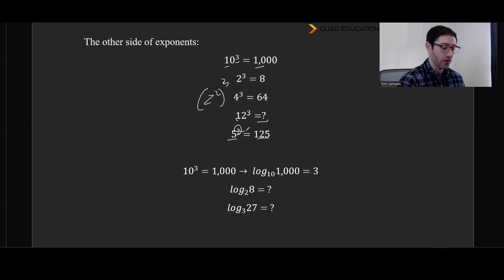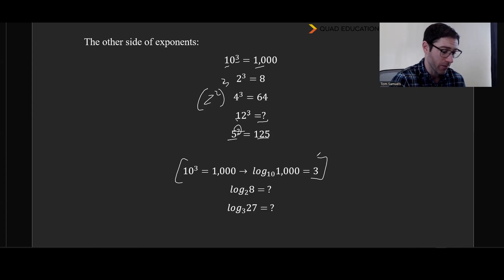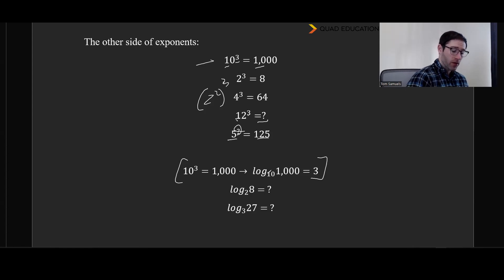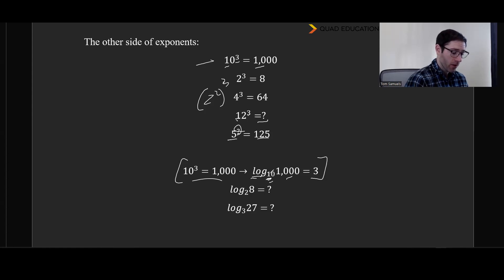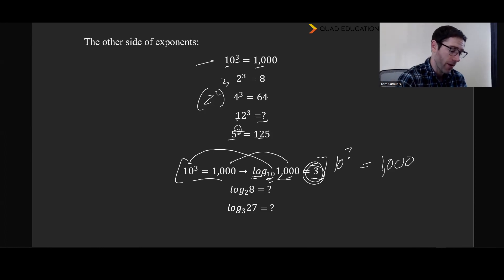I always use this example when solving logarithm questions — just like writing down SOHCAHTOA next to a trig question, I write this down next to any logarithm question so I don't get anything backwards. We know that 10 cubed is 1000, and I always write that next to log base 10 of 1000. The base right there is the base of the number, and 1000 is the output. So log base 10 of 1000 says: 10 to what power equals 1000? We absolutely know that 10 to the power of 3 equals 1000.